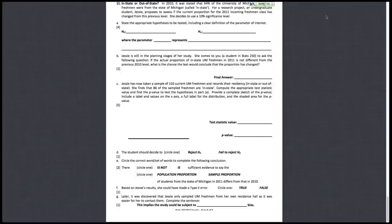The last page of the winter 2012 exam 1, question number 11: in state or out of state. So in 2010 it was stated that 64 percent of the University of Michigan students, freshmen in particular, were from the state of Michigan, in-state. For a research project, an undergrad student proposed to assess if the current population of 2011 incoming freshman class has changed from this previous level.